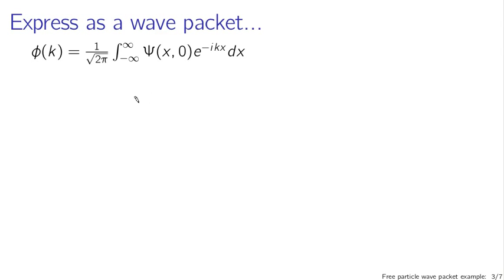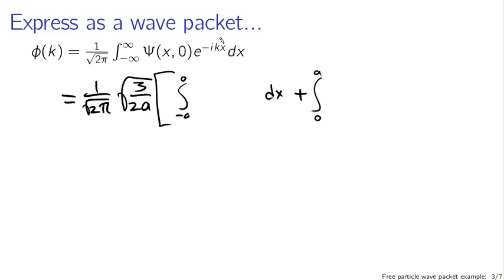What this actually looks like, we have to substitute in our definitions. We have a 1 over root 2 pi as before. From our initial conditions, we have the normalization of the initial conditions, 3 over 2a in a square root sign. And then our initial conditions are split up between the region minus a to 0 and 0 to a. So let's split up our integral from minus a to 0 and again from 0 to a, and we'll be adding these two integrals together. These are going to be integrals dx. I'm just splitting up this integral here.